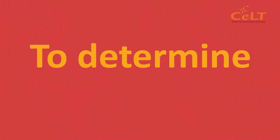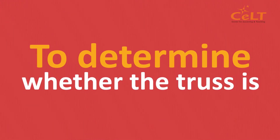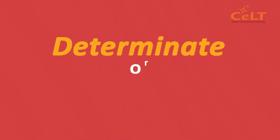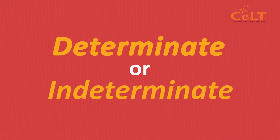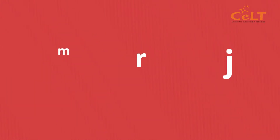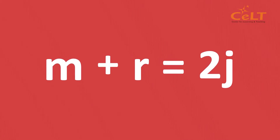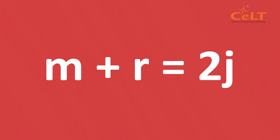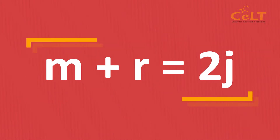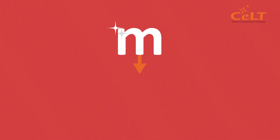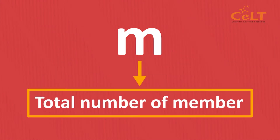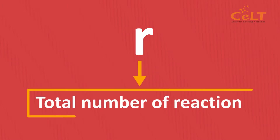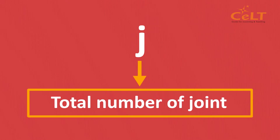Stability and determinacy of a truss depend on the support condition and number of internal members. To determine whether the truss is determinate or indeterminate, we can use the formula M plus R equals 2J, where M is the total number of members, R is the total number of reactions, and J is the total number of joints.